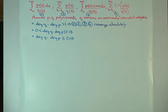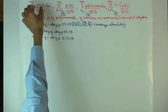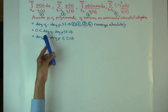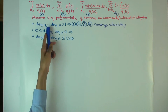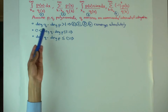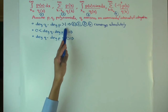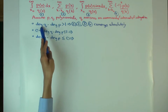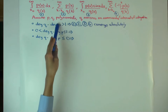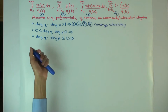They converge and they converge absolutely. That means all of them converge, and even if you replace each one by absolute values, it will still converge. Since we're working with polynomials, the degree difference being greater than 1 actually means it's at least 2 as an integer. But I've written it as 'greater than 1' because when we generalize later, what really matters is greater than 1, not greater than or equal to 2.